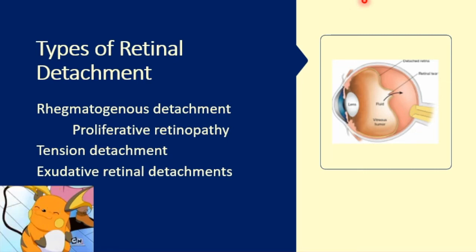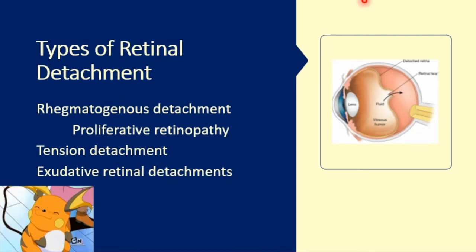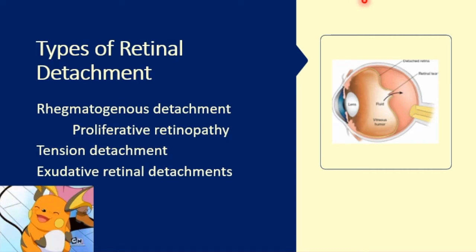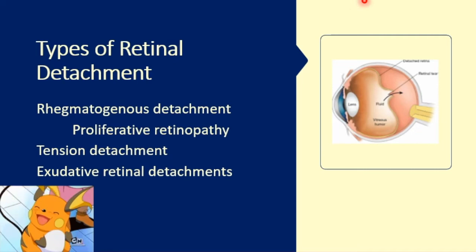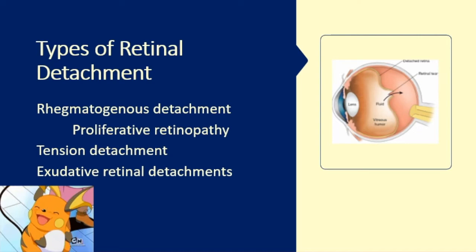Then you have your exudative retinal detachment. As the term implies, there is involvement of exudates — there is a production of serous fluids under the retina. Exudative retinal detachment is common among patients with uveitis, meaning inflammation or infection of the uvea, and also in macular degeneration.